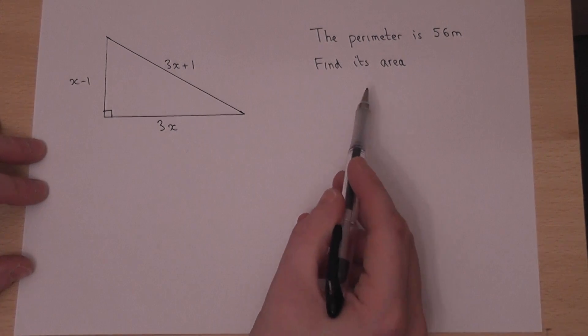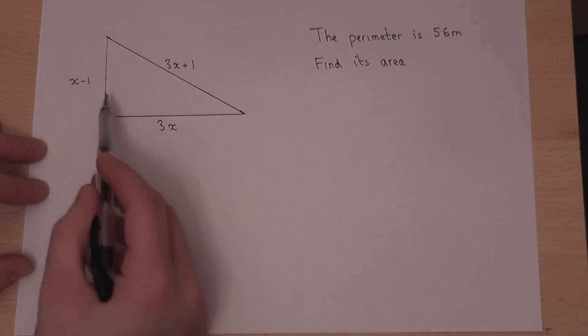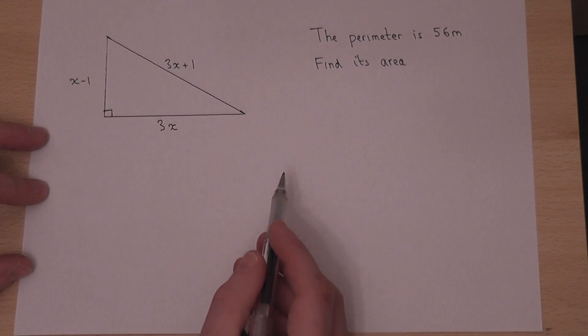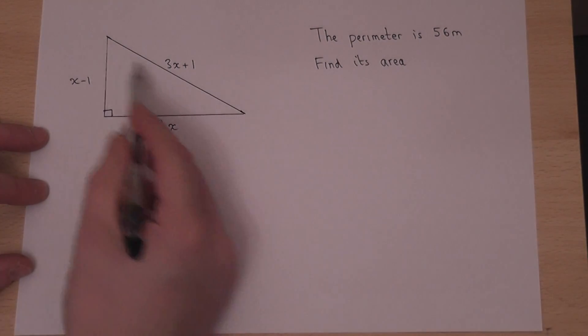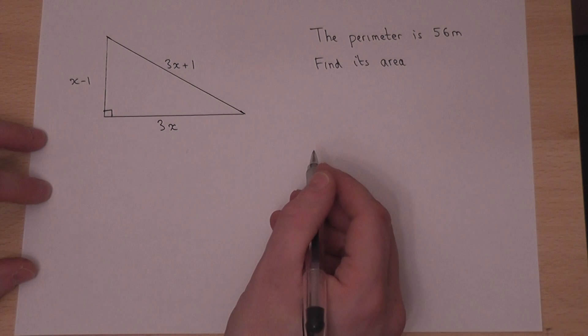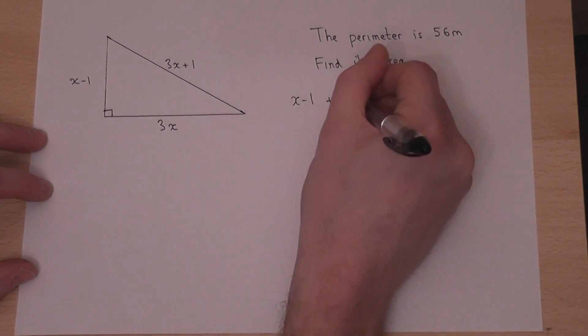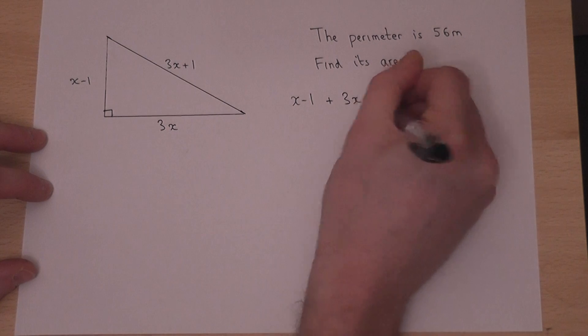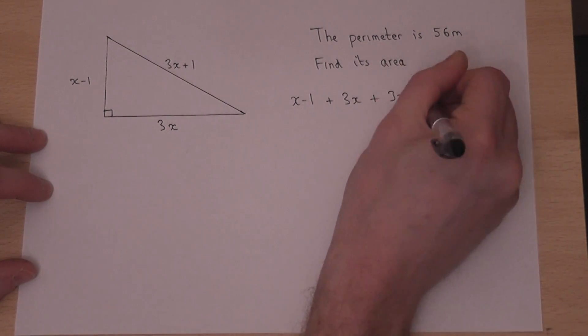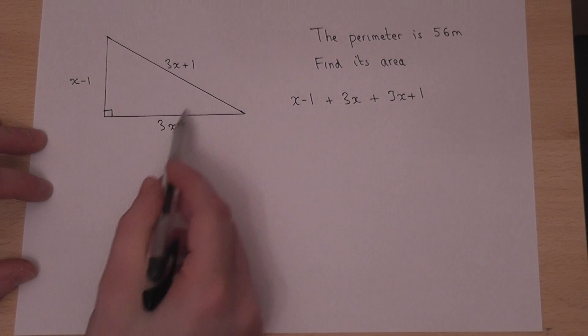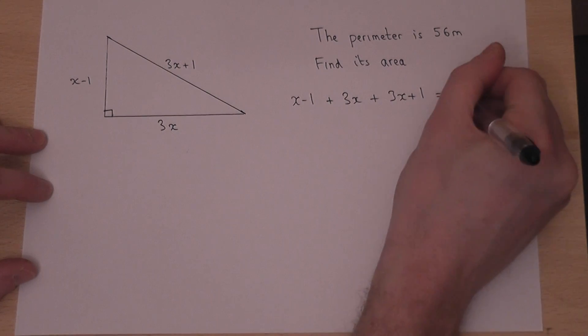Now the method here is to write down an equation involving the perimeter. Perimeter means add together the sides, so we therefore know that x minus 1 plus 3x plus 3x plus 1, that side, that side and that side, must equal 56.